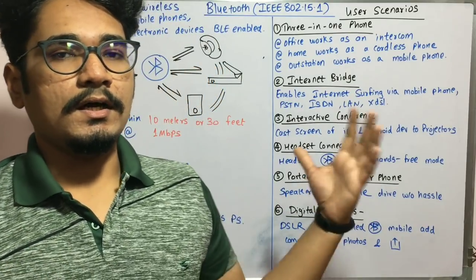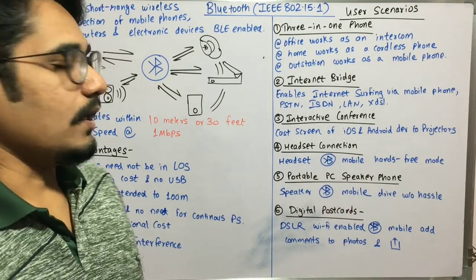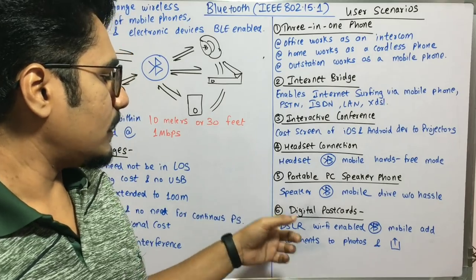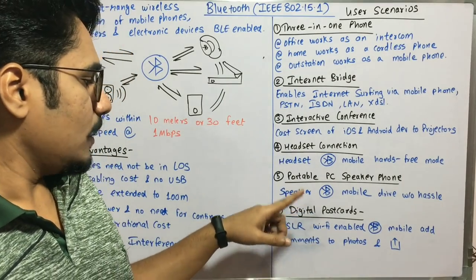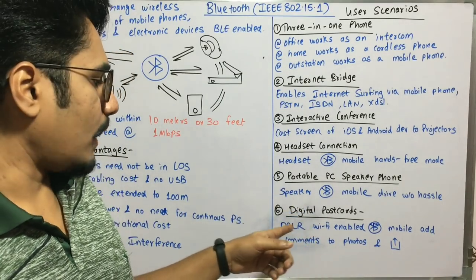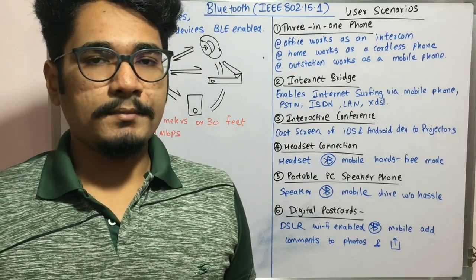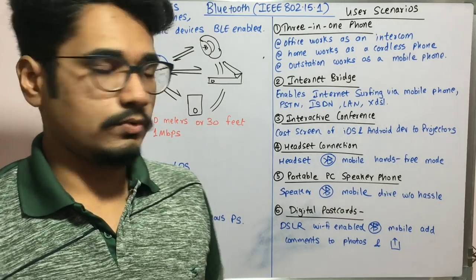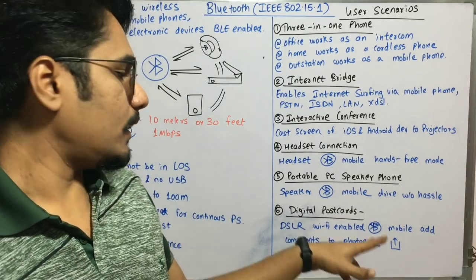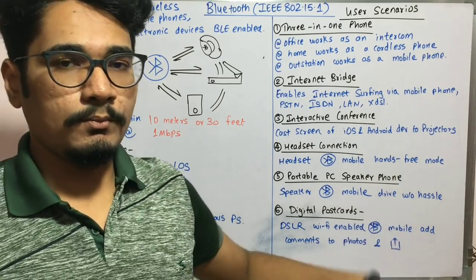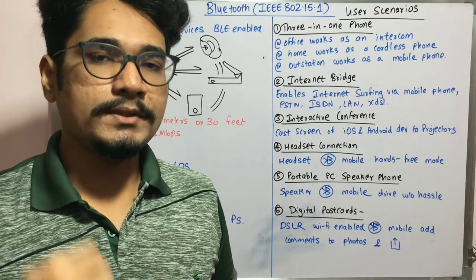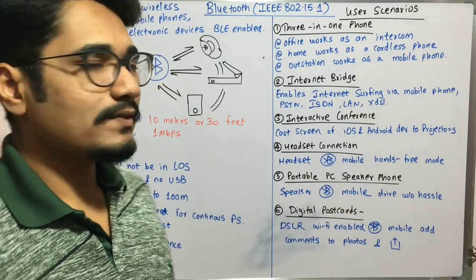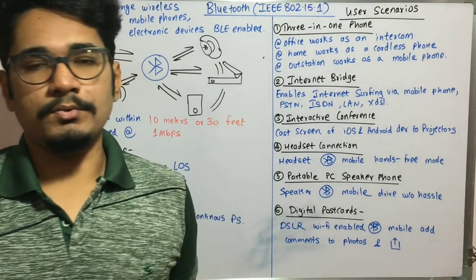Finally, there is the digital postcard use case. Some DSLR cameras with higher-range models are Wi-Fi and Bluetooth enabled. If you connect a Bluetooth-enabled DSLR to your mobile phone, you can add comments to photos and share them over social media, which is an added advantage provided by Bluetooth.